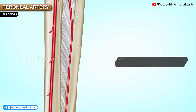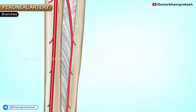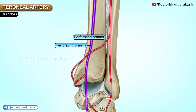It gives muscular branches to the posterior and lateral compartments of the leg. It supplies a nutrient artery to the fibula. It provides a communicating branch with similar branches of the posterior tibial artery about five centimeters above the ankle.